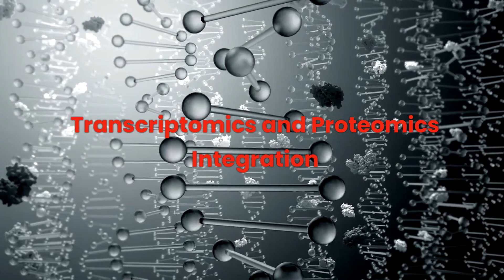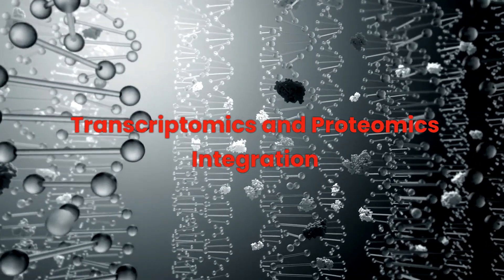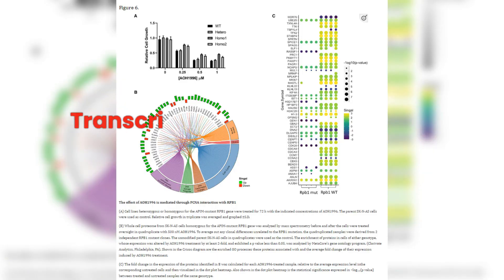Transcriptomics and proteomics integration. In image 6, the integration of transcriptomic and proteomic data is exemplified. This image provides a CIRCOS plot, a visual tool that helps us correlate genomic alterations with protein expression changes, offering a holistic view of AOH 1996's cellular impact.